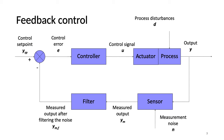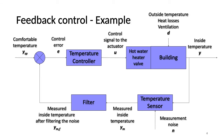The set point is the desired output variable, also called the reference value. The control error is the difference between the set point and the measured output variable. To understand the feedback control system better, I'm going to explain it using a simple example.